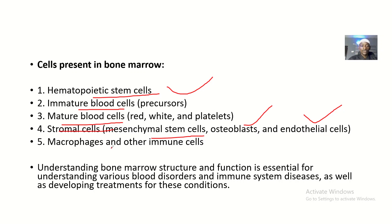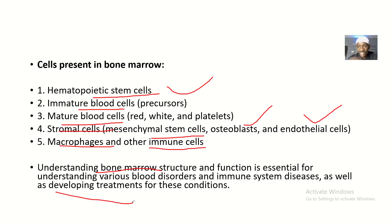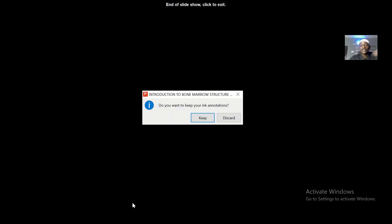We also have macrophages and other immune cells that are present in the bone marrow. Understanding bone marrow structure and function is essential for understanding various blood disorders and immune system diseases, as well as for developing treatments for these conditions. So for you to actually know the abnormal, you should know the normal. That's it about this introduction to bone marrow structure and functions.